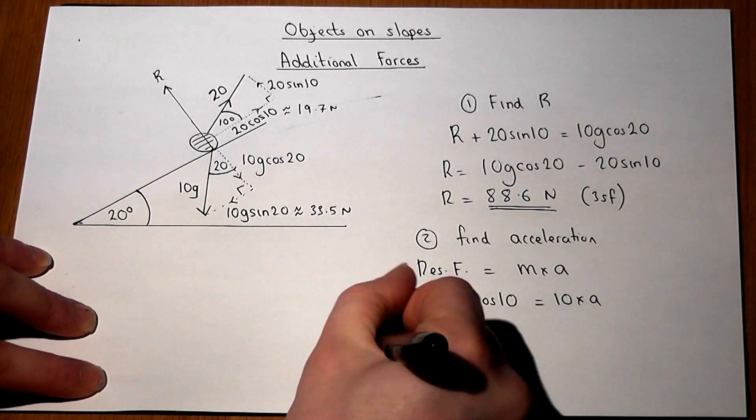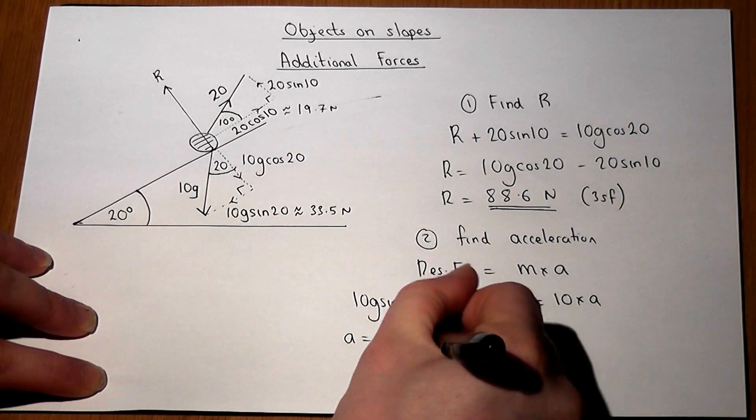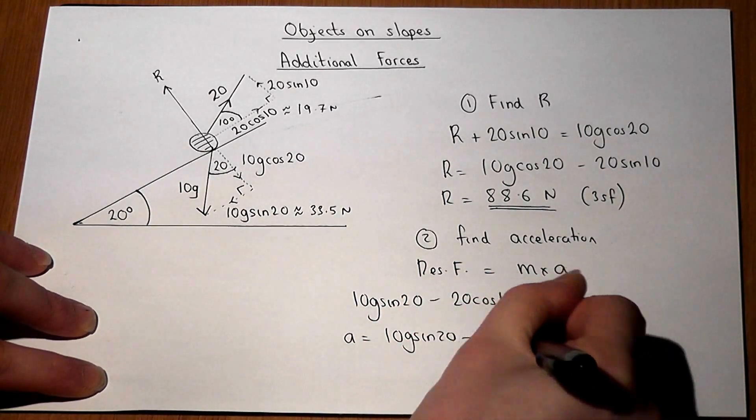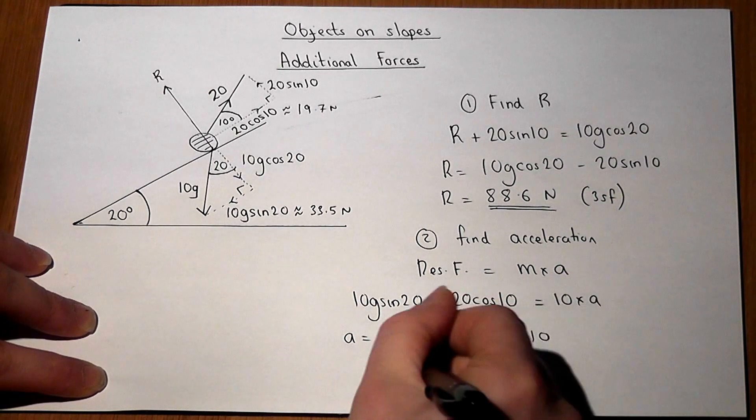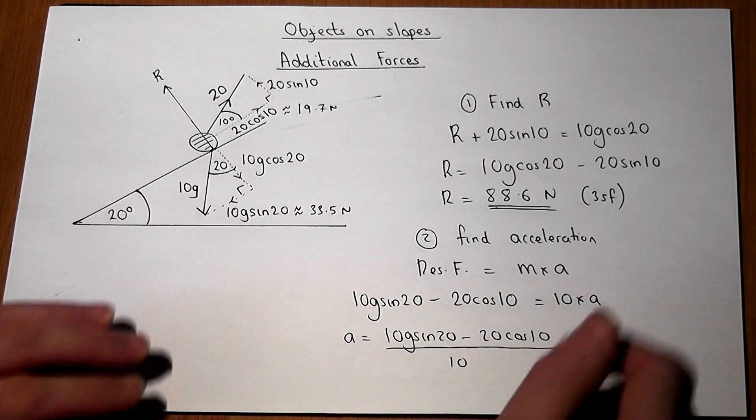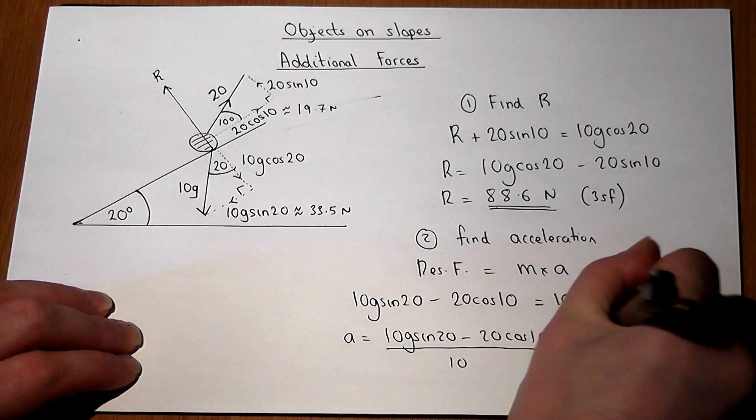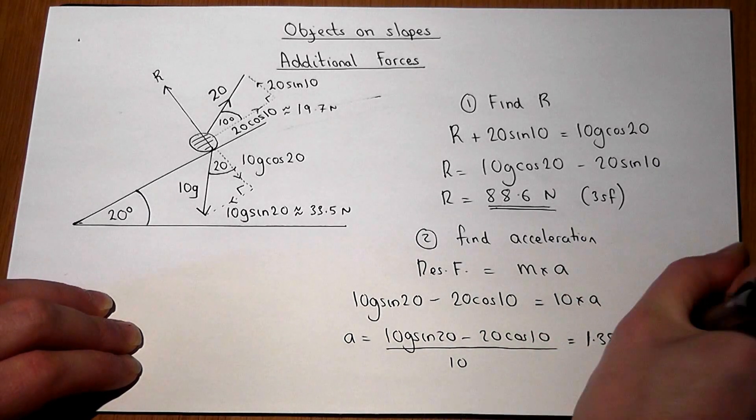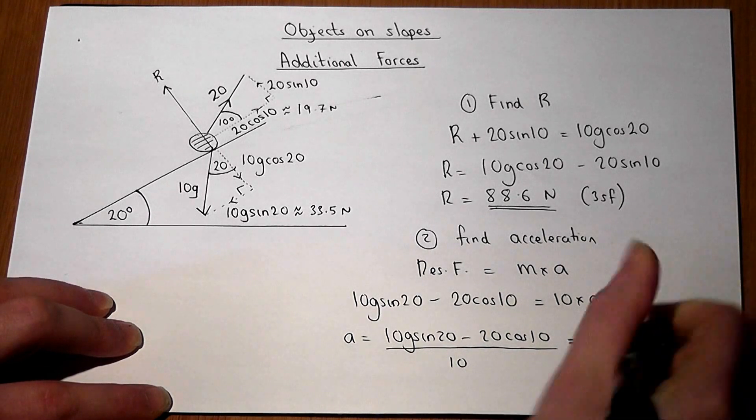So therefore, A will equal 10g sin 20, take away 20 cos 10, all over the mass. Let me get my calculator out. Let's work this out. We find that the final acceleration is 1.38 meters per second squared to 3 significant figures.